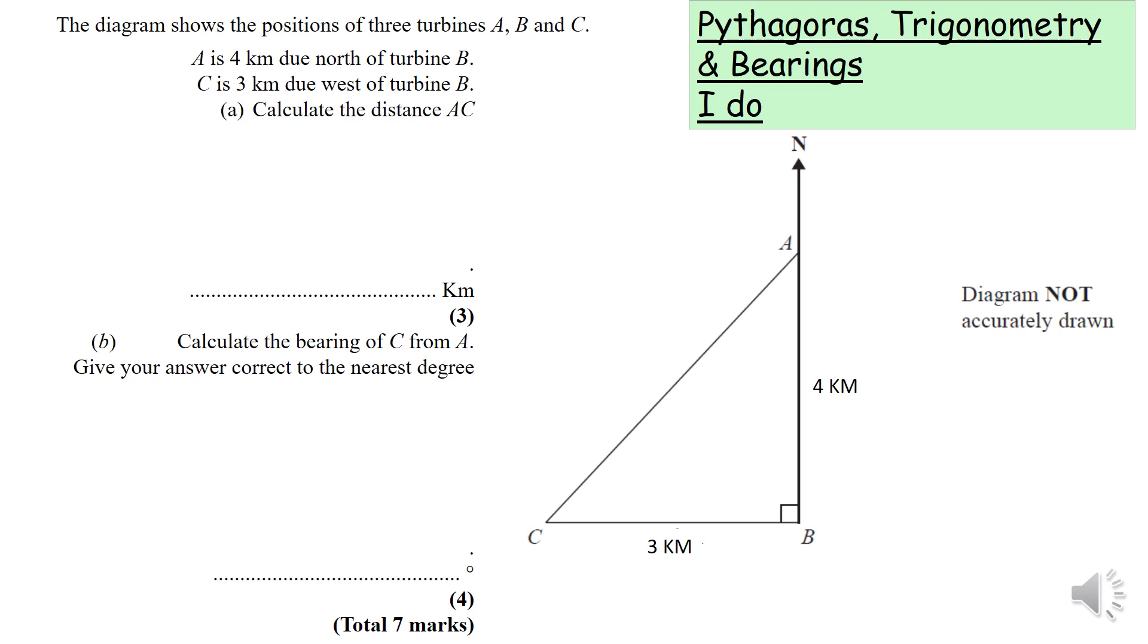Today's exam-style question involves Pythagoras, trigonometry, and bearings. Let's look at this question - it wants us to work out the distance AC. It's a right-angled triangle, so that should be a hint that this question may involve Pythagoras or trigonometry. Two lengths have been given: 3 kilometers and 4 kilometers, and it wants us to work out the third length.